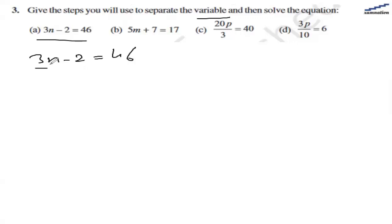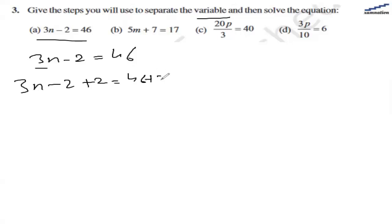On the left hand side we have two terms: 3n and minus 2. So first we are going to add plus 2 on both sides. So adding plus 2 on both sides we have 3n minus 2 plus 2 equals 46 plus 2. Here minus 2 plus 2 gives us 0, so we are left with 3n, and 46 plus 2 gives us 48.